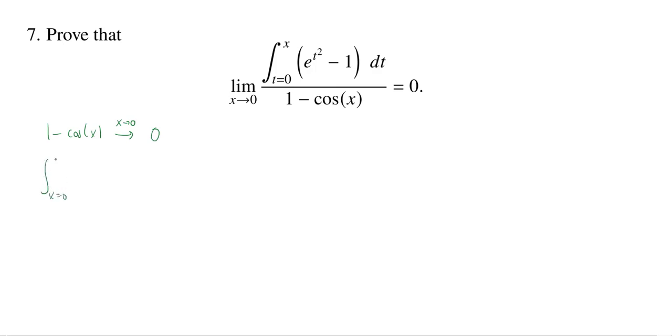What about the numerator? You have an integral, t goes from 0 to x, and then you have this monstrosity: e to the t squared minus 1 dt. But we want to know what happens as x goes to 0. As x goes to 0, this integral is just starting to look like integrating from 0 to 0, which is 0.